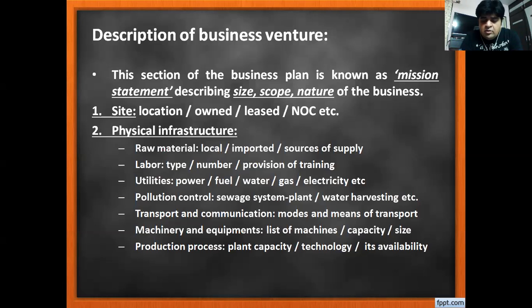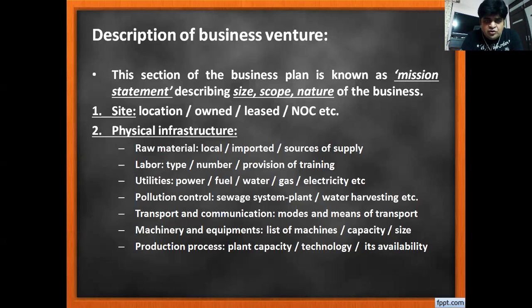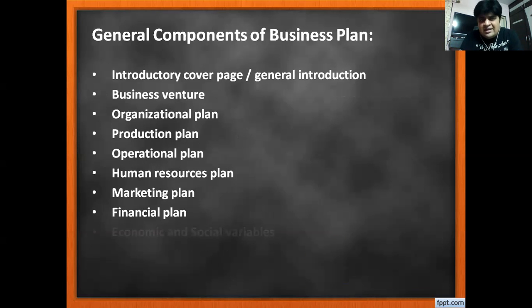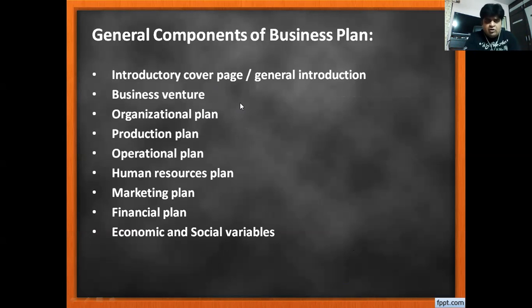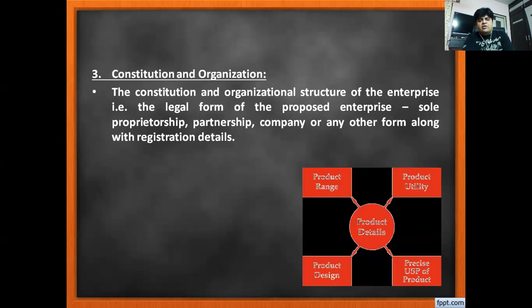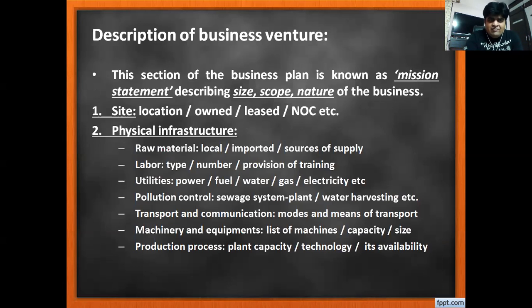So to summarize, the general components of the business plan that we covered today include two parts: the introductory cover page and the business venture. In the introductory profile and general instruction, we covered entrepreneur's bio data, industry profile, constitution and organization, and product details. In the description of the business venture, we covered site and physical infrastructure.